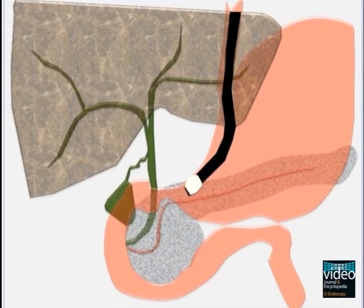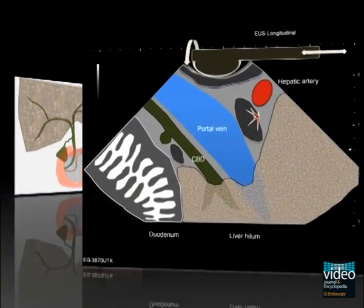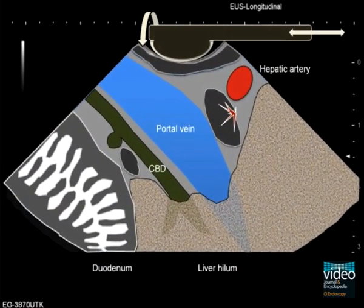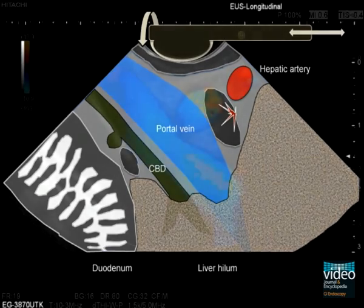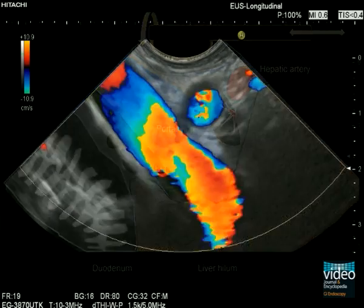By further withdrawing the scope, it will slip into the stomach. In the gastric antrum, we get an excellent view on the structures of the liver hilum with the common hepatic duct, the extrahepatic portal vein, the common hepatic artery, and the normal lymph nodes of the liver hilum. Color-coded duplex scanning facilitates correct identification of these anatomical structures.